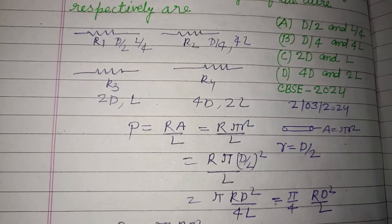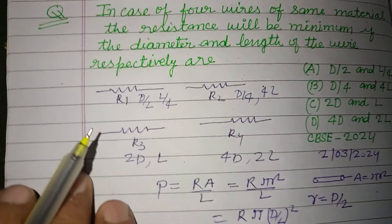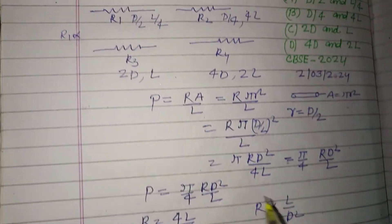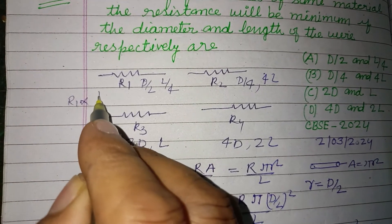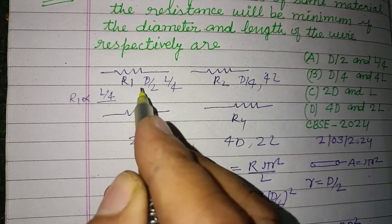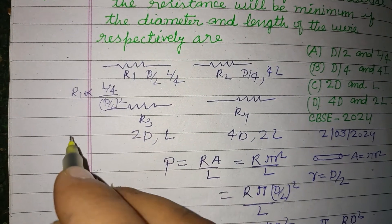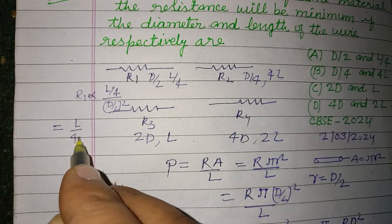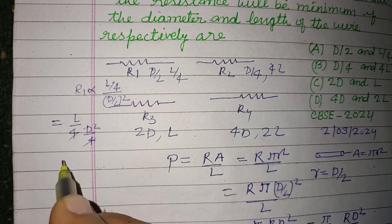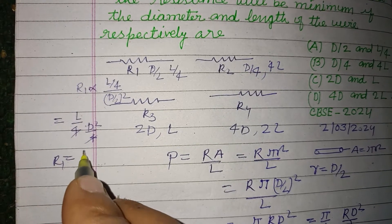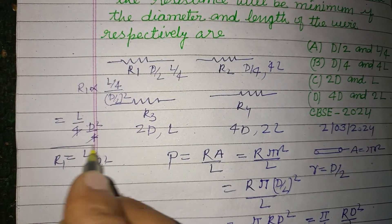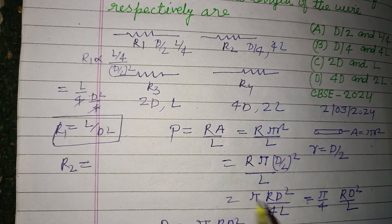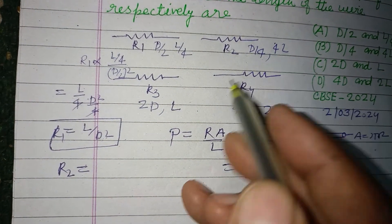Now we check each wire. For Wire 1: R1 ∝ L/D², where L = L/4 and D = D/2. So R1 ∝ (L/4) / (D/2)² = (L/4) / (D²/4). The 4s cancel, giving R1 ∝ L/D².